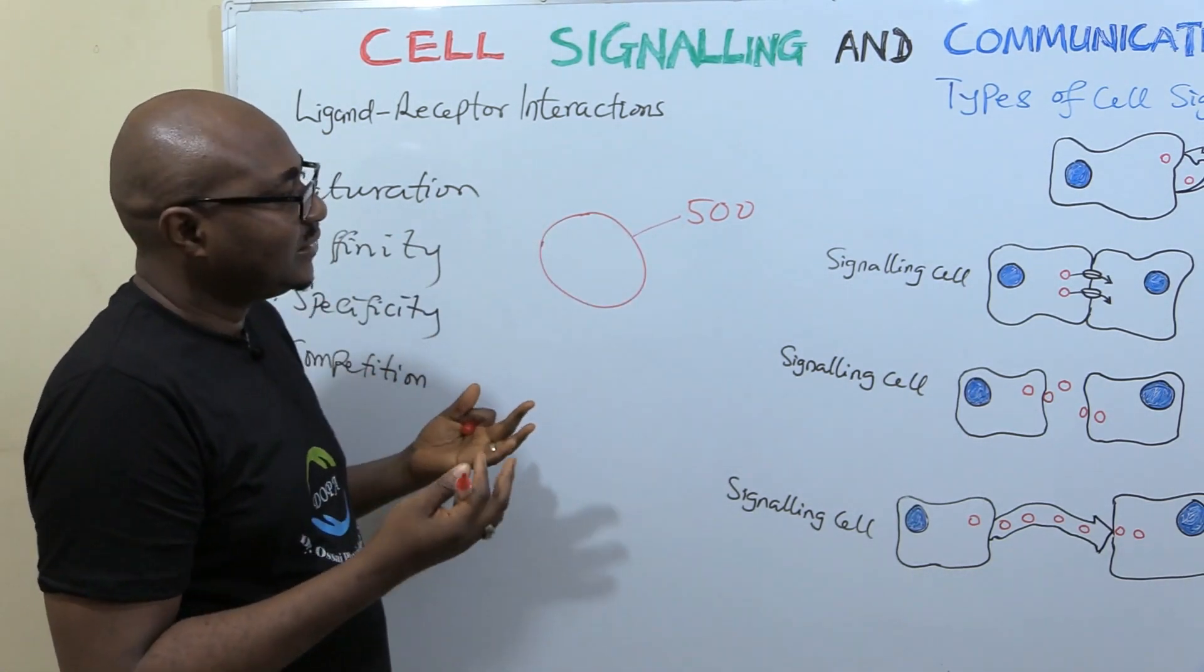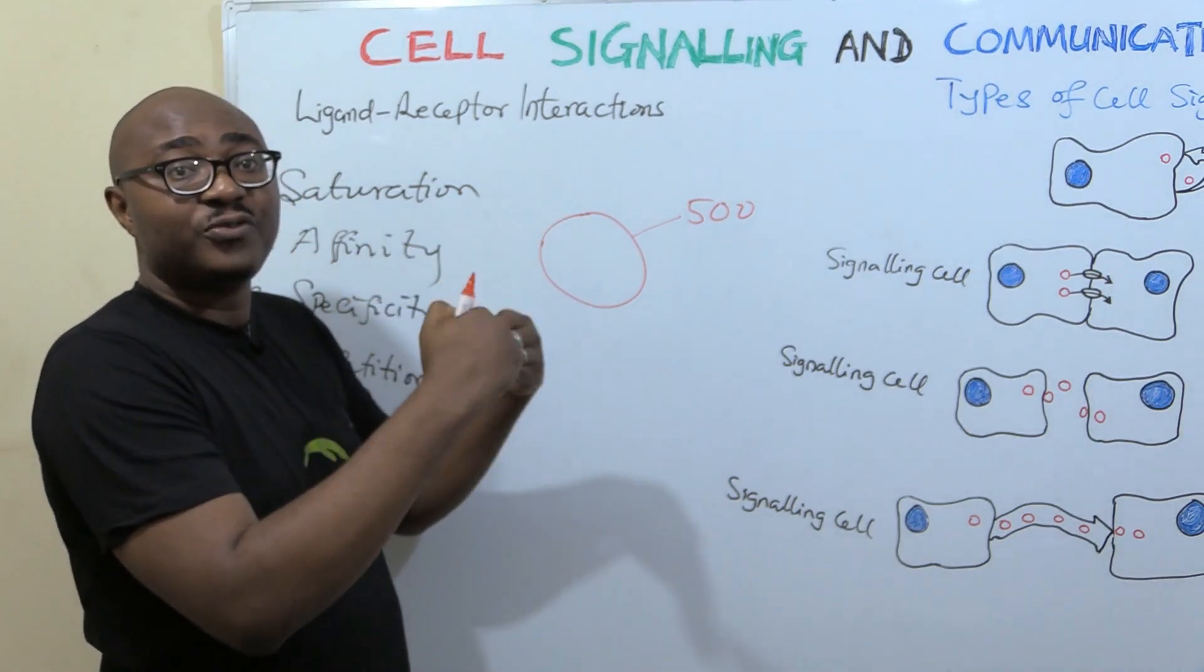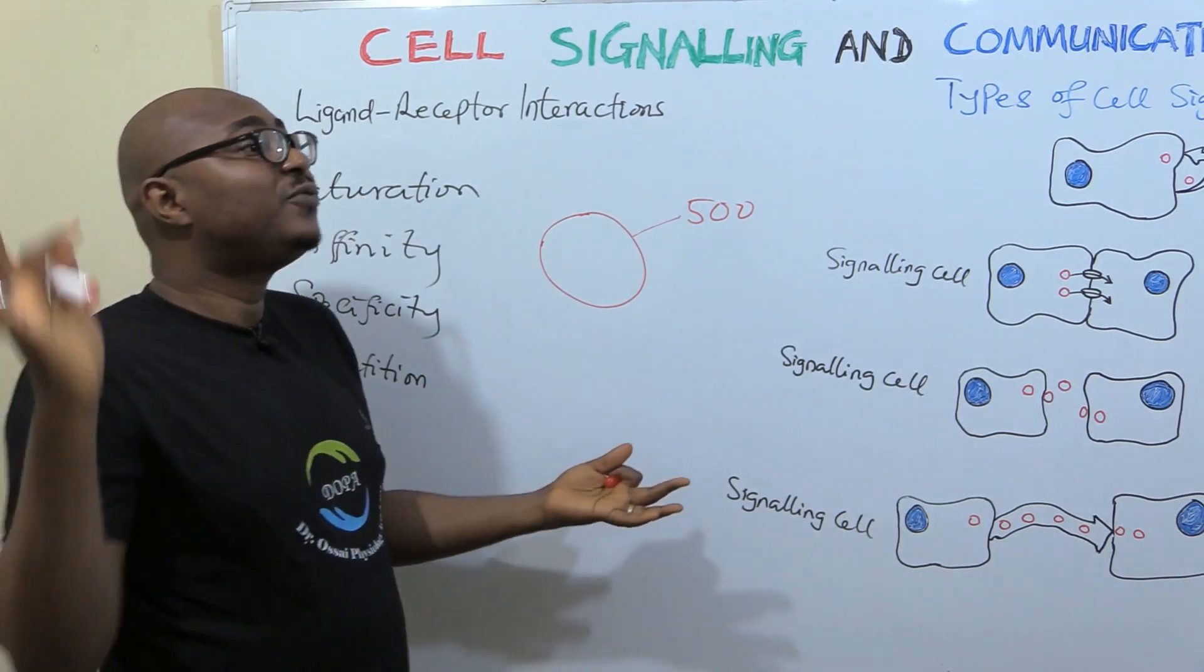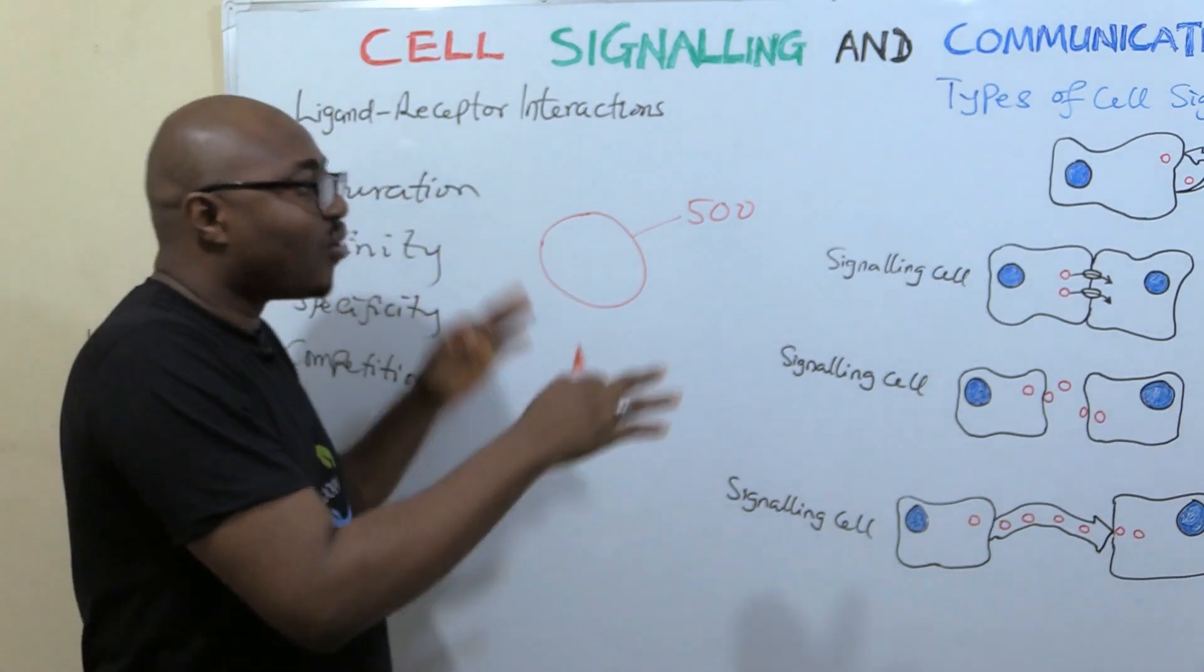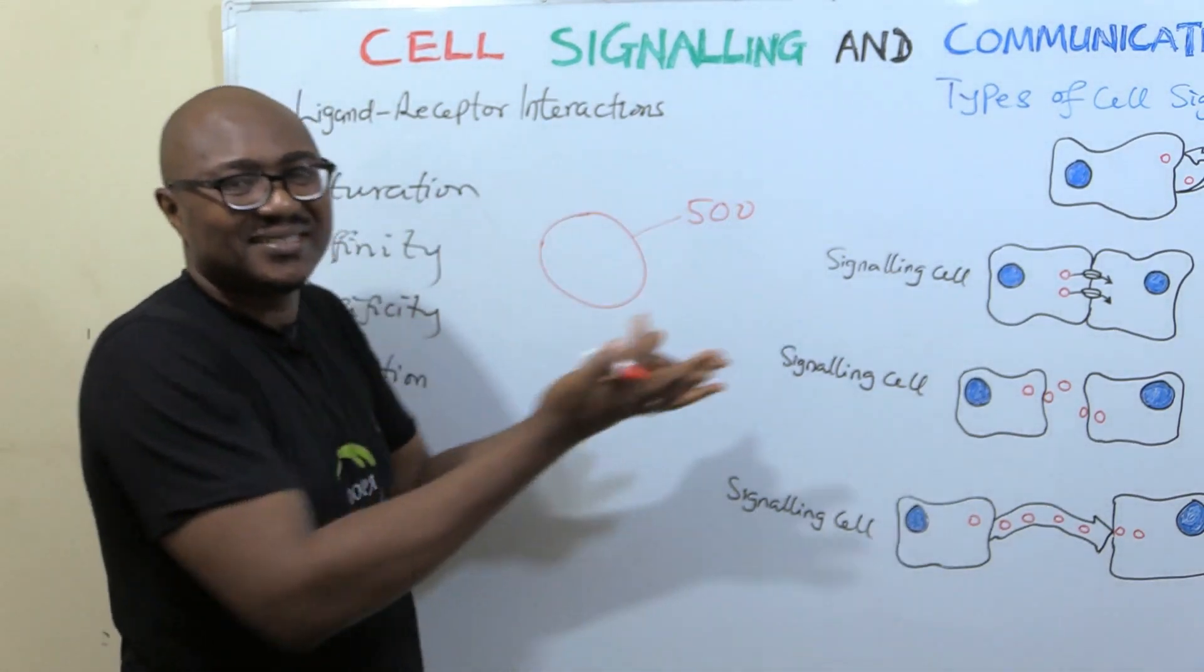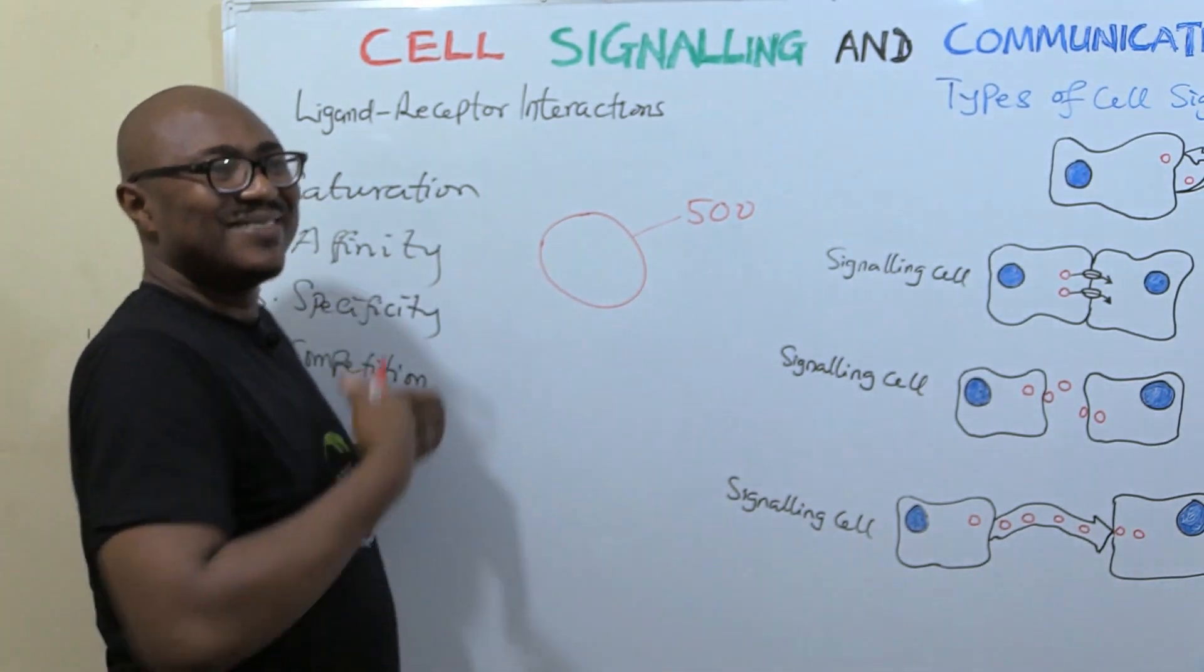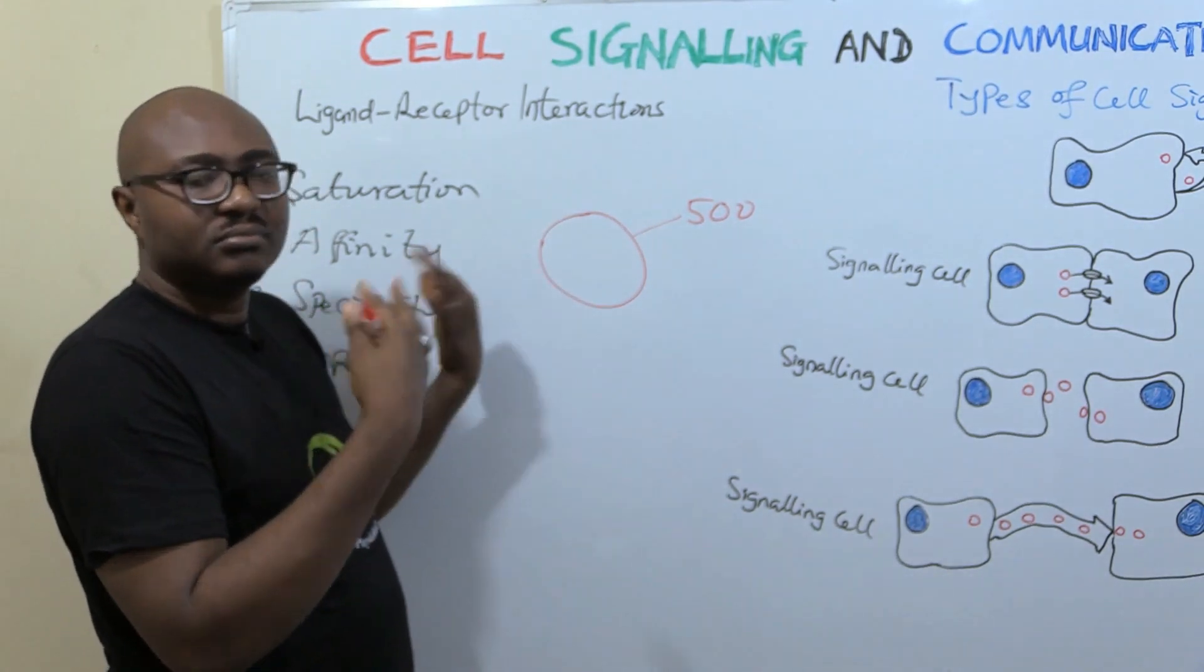But when there's something like diabetes, there's a lot of glucose. The amount of glucose is far more than what is available for binding, so the excess will now be excreted in the urine. The same thing when you relate it to cell signaling: there is a maximum amount of response that a cell can have.